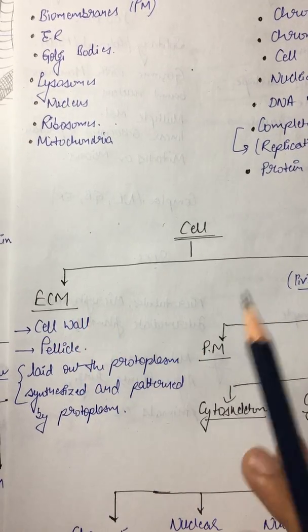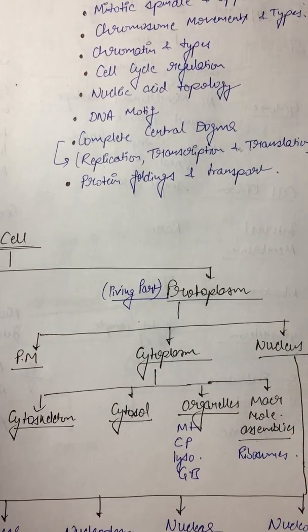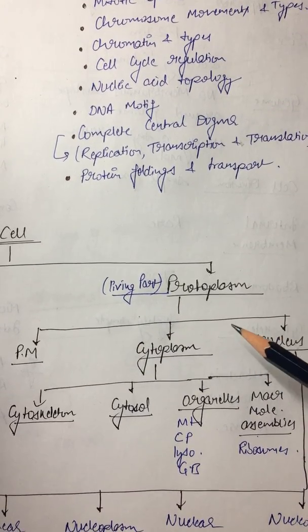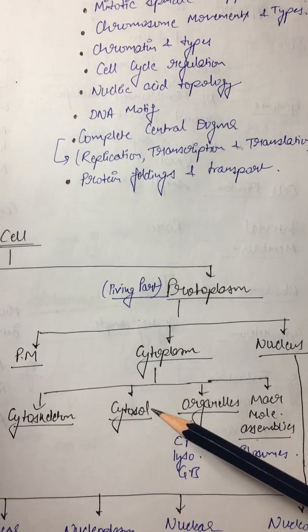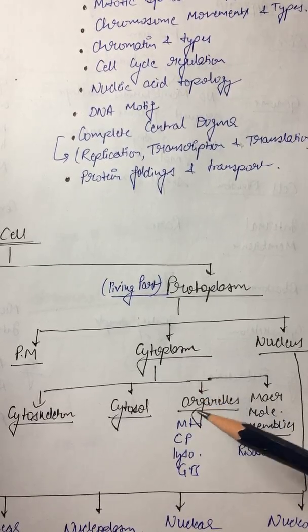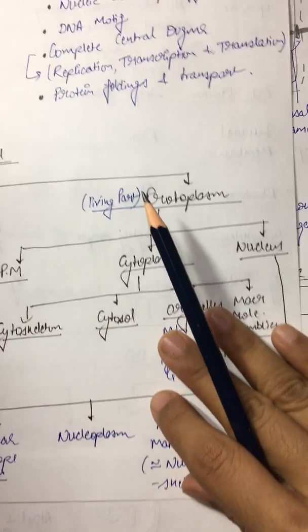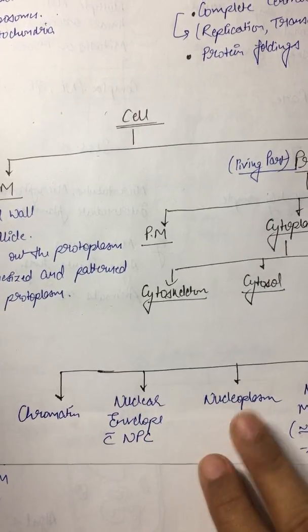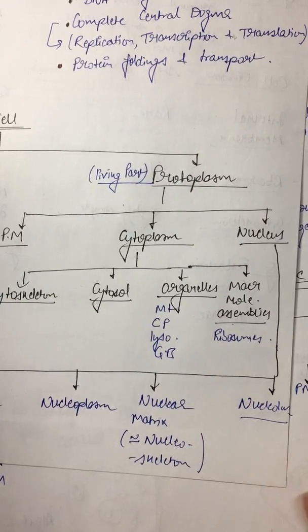Then in protoplasm, which includes plasma membrane, cytoplasm, and nucleus. In cytoplasm, cytoskeleton is present to give the structure to the cell, cytosol, organelles which have mitochondria, chloroplast, lysosome, Golgi body, and macromolecule assemblies like ribosomes. In nucleus, it has chromatin, nuclear envelope, nucleoplasm, nuclear matrix, and nucleolus.